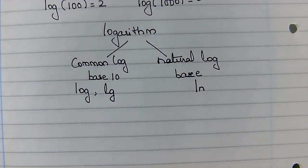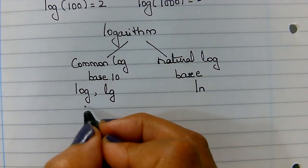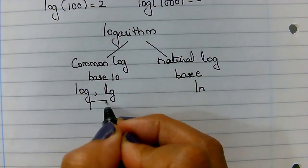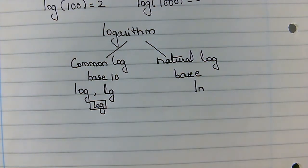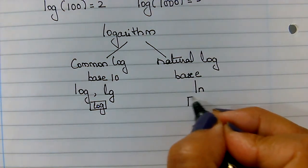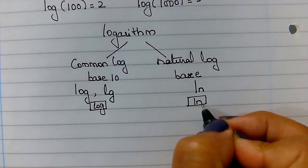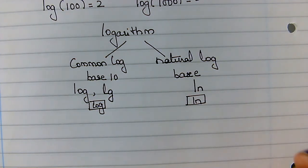They're very easy to find in your calculator. In your calculator, if you look, there is a button which says log. That is what you use for common log and there is another button that says ln and that is what you use for your natural log.